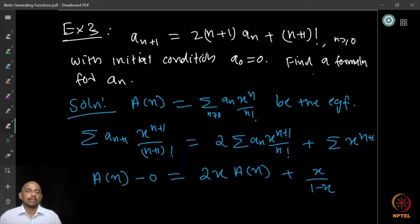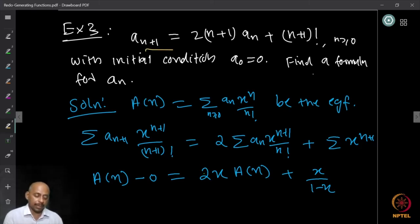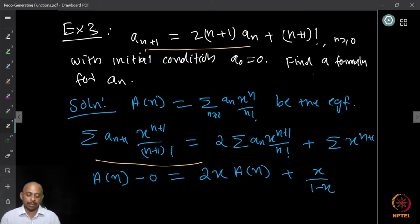Another example: aₙ₊₁ = 2(n+1)aₙ + (n+1)! for n ≥ 0, with a₀ = 0. Find a formula for aₙ. We set up A(x) = ∑ aₙ · xⁿ/n! and apply the exponential generating function method, multiplying the recurrence by xⁿ⁺¹/(n+1)! and summing.